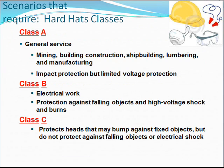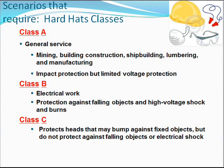Hard hat classes. Class A is for general service including mining, building construction, shipbuilding, lumbering, and manufacturing. It provides impact protection but limited voltage protection. Class B is for electrical work, providing protection against falling objects and high voltage shocks and burns. Class C protects the head from bumping against fixed objects but does not protect against falling objects or electrical shock.